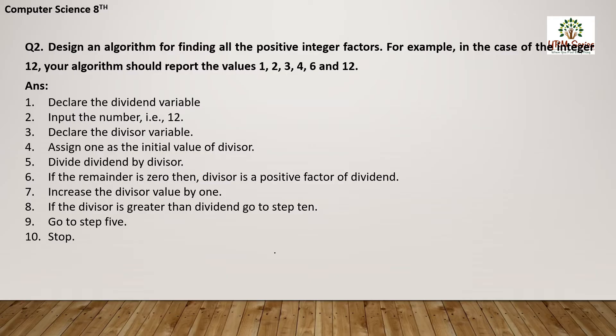If the divisor is greater than the dividend, then go to step number 10 — meaning we stop. For example, if the dividend is 12 and the divisor is 13, then the divisor is greater and we stop. If the value is less than 12, we go back to step number 5. In step number 9, we write 'go to step number 5'. This is the loop process until the value becomes greater than the number.